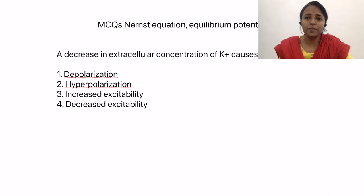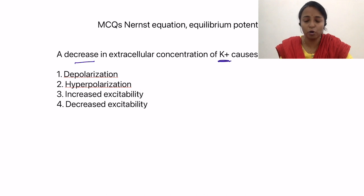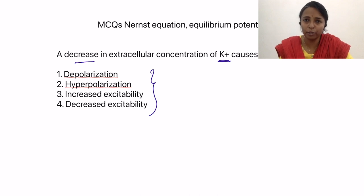Let us solve some important questions on equilibrium potential and resting membrane potential. The first question goes like this: a decrease in extracellular concentration of potassium causes which of these? For solving this, we need to know about the Nernst equation, which gives us the equilibrium potential of a particular ion.